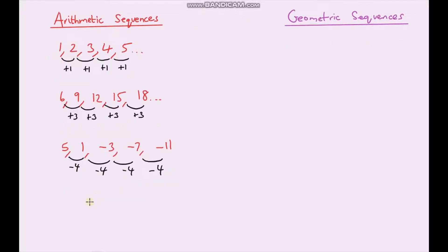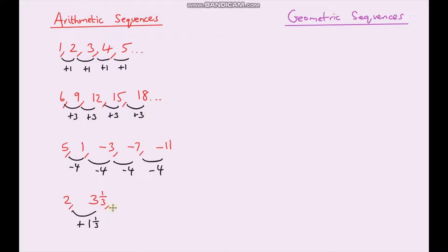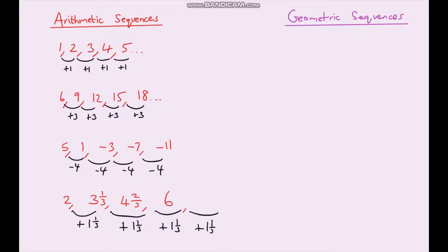Let's do one more, and this time I'm going to include fractions just to mix things up. Assuming this is an arithmetic sequence, see if you can work out what the next three terms are. To go from two to three and a third, it looks like I'm adding on one and one third. Because this is an arithmetic sequence, the difference between each term is the same, so I keep adding one and one third. Six plus one and a third gives me seven and one third.